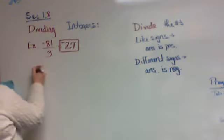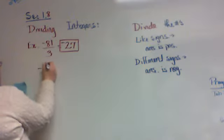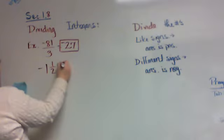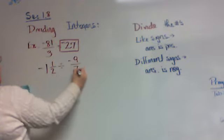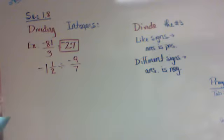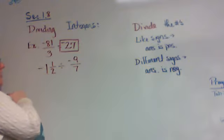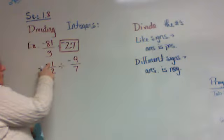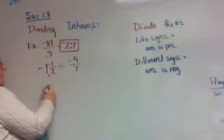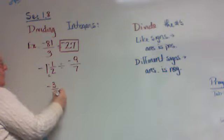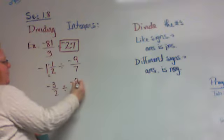Next example: negative one and a half divided by negative nine over seven. When you're dividing fractions, they have to be improper. Can't have mixed numbers. That's why we don't like mixed numbers in algebra. So I need to go ahead and change this to an improper fraction. 2 times 1 is 2, plus the one on top. So 2 times 1 is 2 plus 1 makes that a negative 3 over 2 divided by negative 9 over 7.